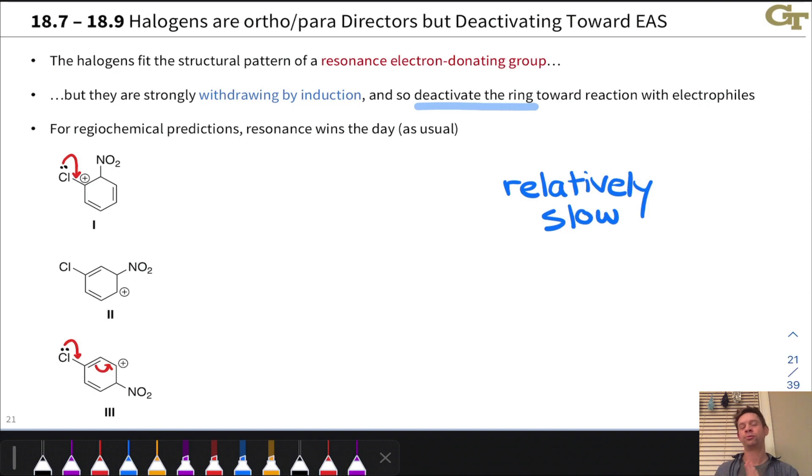However, for the directing effects, resonance wins the day, and the fact that these are resonance donating groups makes them ortho-para directors. This is what we observe empirically—halogens direct substitution to their ortho- and para-positions.